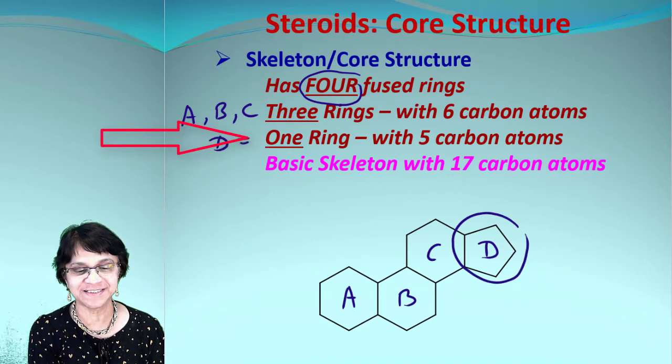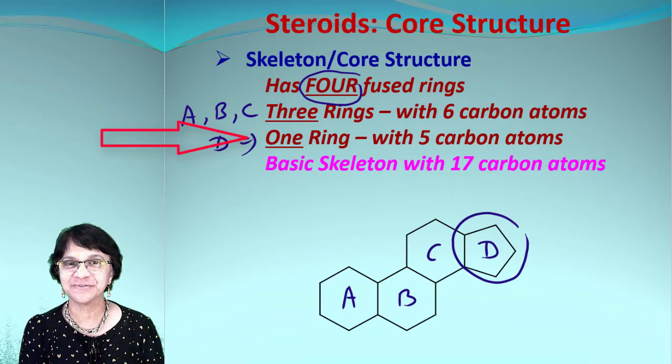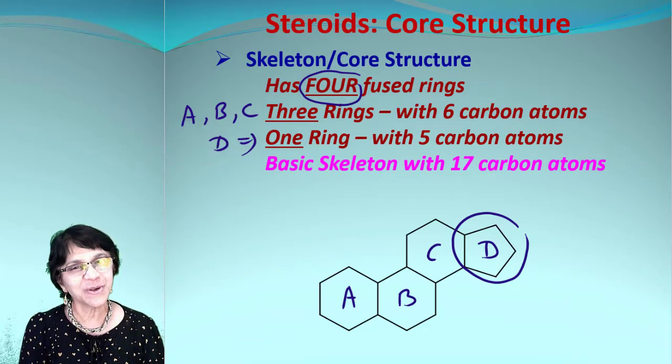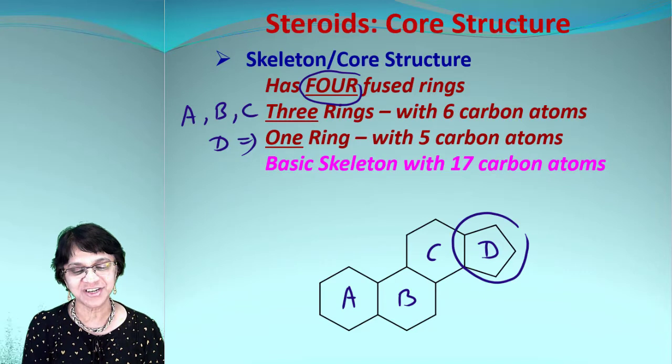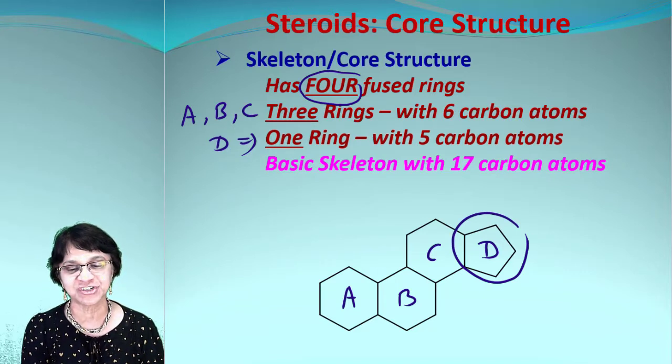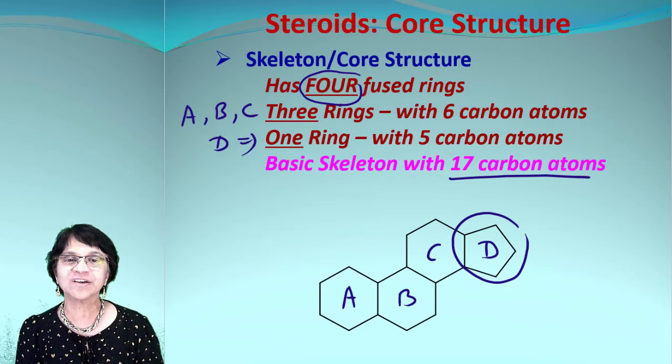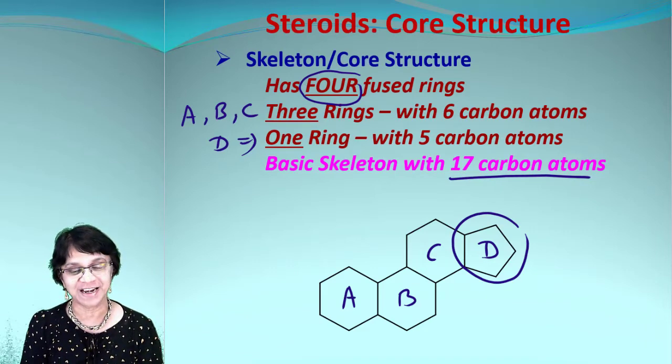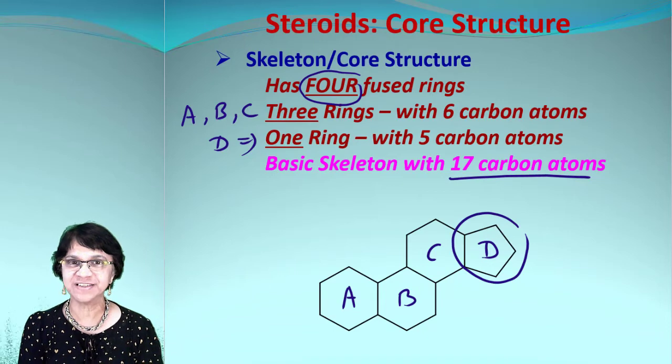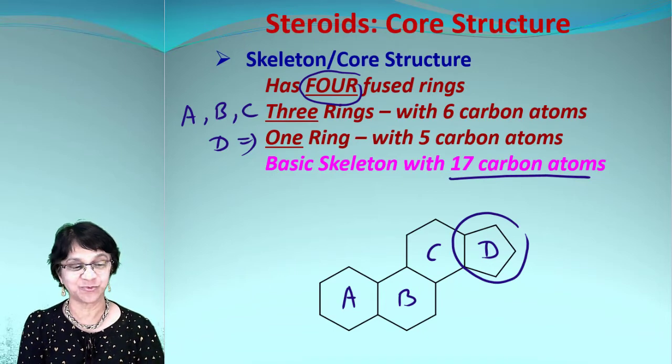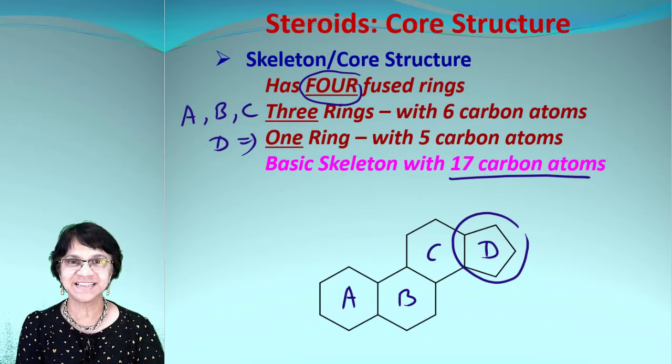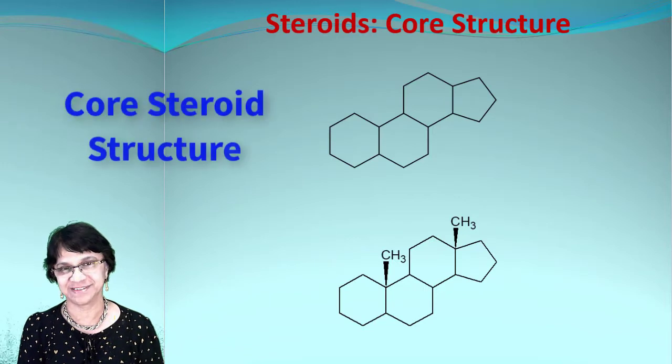So D is the ring which is made up of five carbon atoms. How many carbon atoms we got in all in this core structure? Those are 17. And of course there will be some branches and some other groups attached to that, but basically every steroid must have these four rings and 17 carbon atoms.